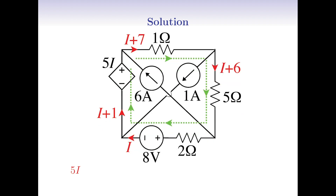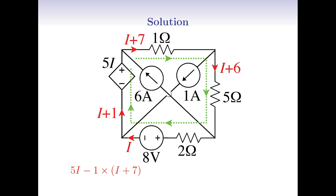Then, we get minus 1 multiplied by I plus 7, by Ohm's law. Note that we get a minus sign here because we are passing through the 1 ohm resistor in the direction of the current I plus 7. Whenever we pass a resistor in the direction of the current we get a minus sign since the voltage has dropped down, and whenever we pass a resistor in the opposite direction of the current, we get a plus sign since the voltage has increased. Keep going to finish the loop. We have minus 5 multiplied by I plus 6, and then minus 2 multiplied by I.